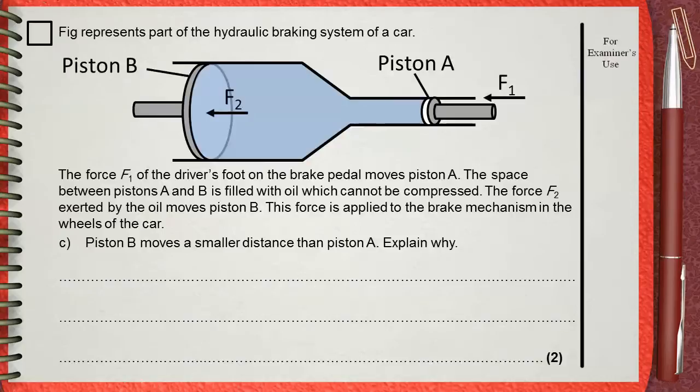This question belongs to the previous one, C. Piston B moves a smaller distance than Piston A. Explain why.